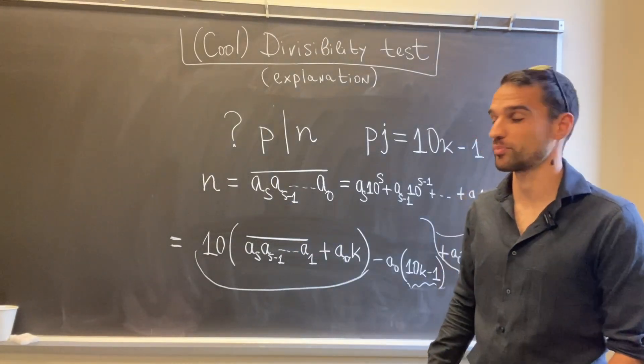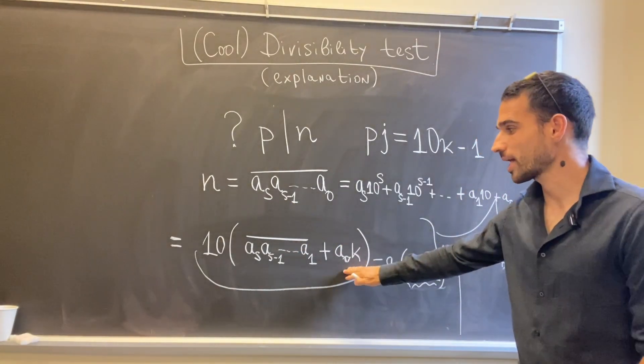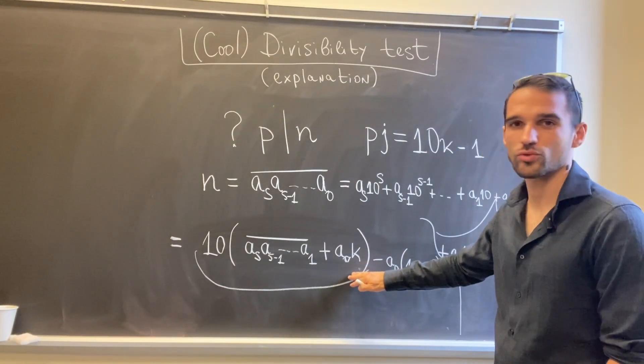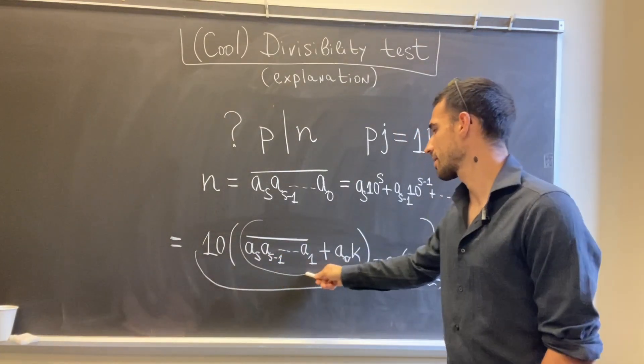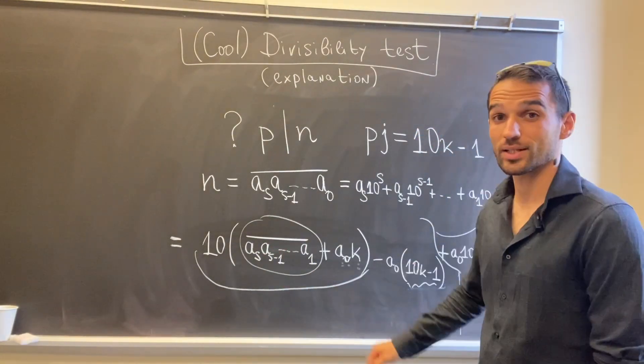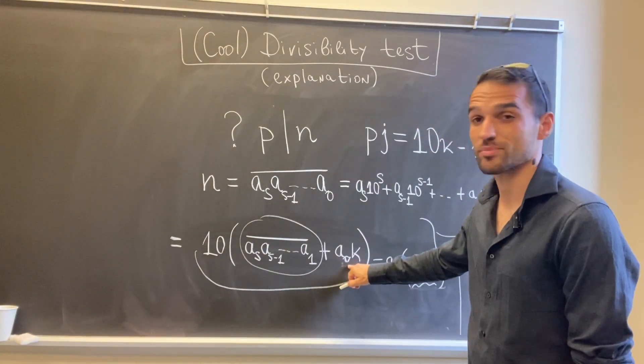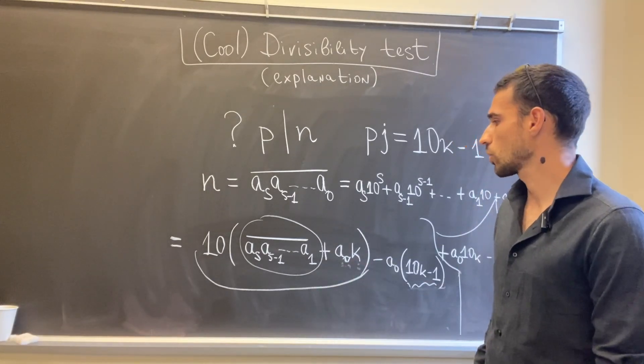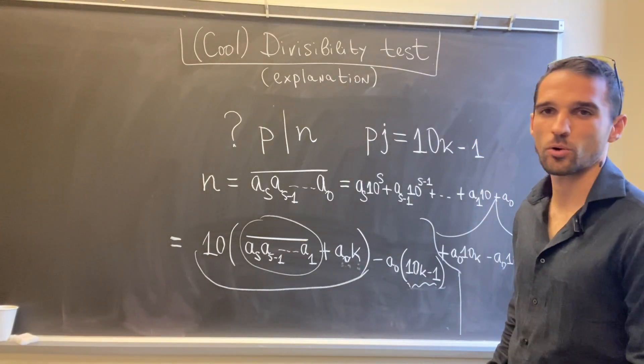But what do we have here? Well, exactly what we do in the test. We take the number n without its last digit and then we add this last digit times k. So yeah, this is simply where it comes from.